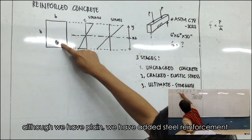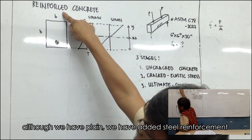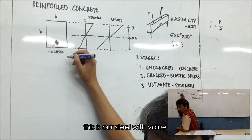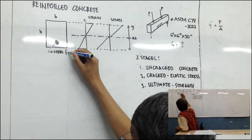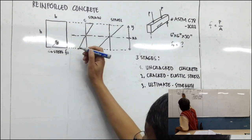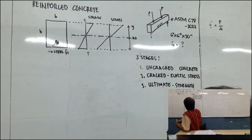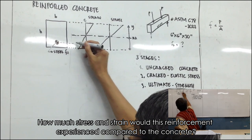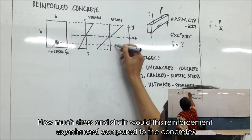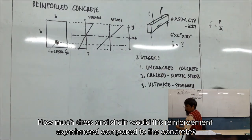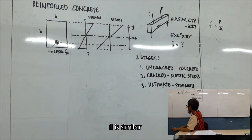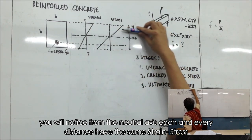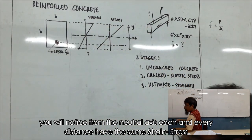Although we have the plate, we now added steel reinforcement. So this is our steel, with a value of strength and stress. How much stress and strength does this reinforcement experience compared to the complete cross section? It is similar — from the neutral axis, each and every distance has the same strength and stress.